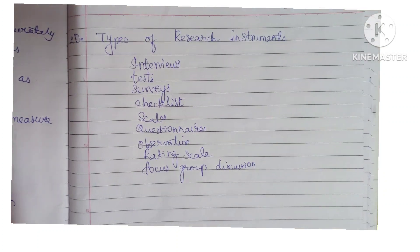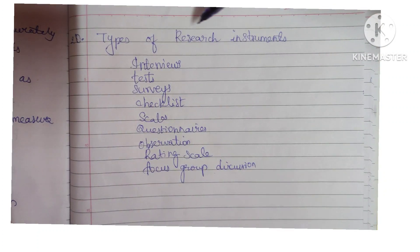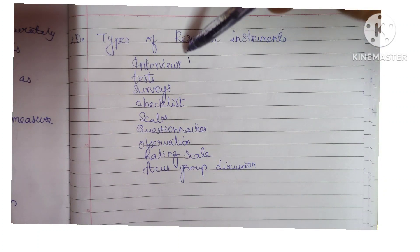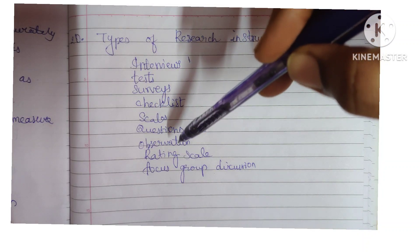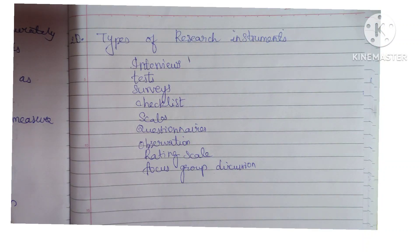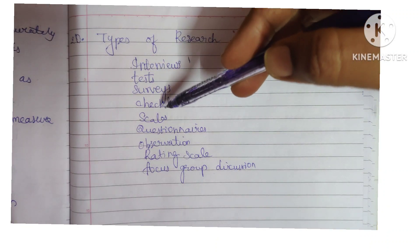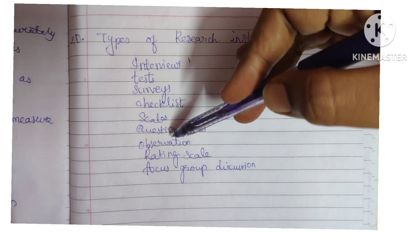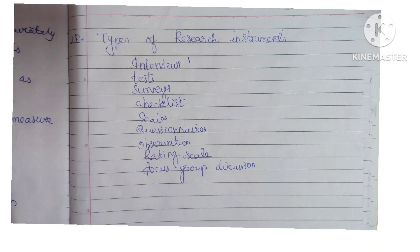Last question, twentieth question: types of research instruments — interview, test, surveys, checklist, scales, questionnaire, observation, rating scale, focus group discussion, etc.